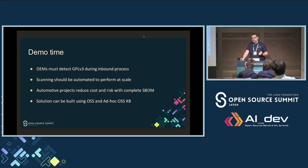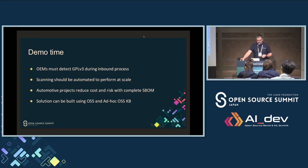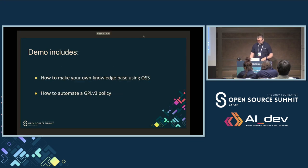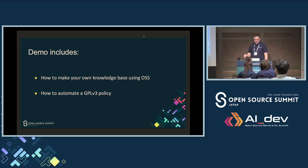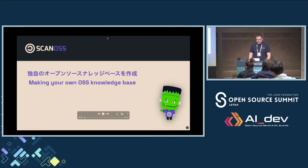The scanning should be automated to perform at scale — you want to automate this from a CI/CD pipeline. I'll be showing you how to scan from a CLI, and you can use any kind of pipeline integration. You'll reduce cost and risk with having a complete SBOM, essentially checking your SBOM against plagiarism. You can do this against the massive knowledge base or create your own ad hoc knowledge base. The demo has two parts — one is how to make the knowledge base, and another is to automate this with GitHub Actions. I have some translations to Japanese done by Claude AI.